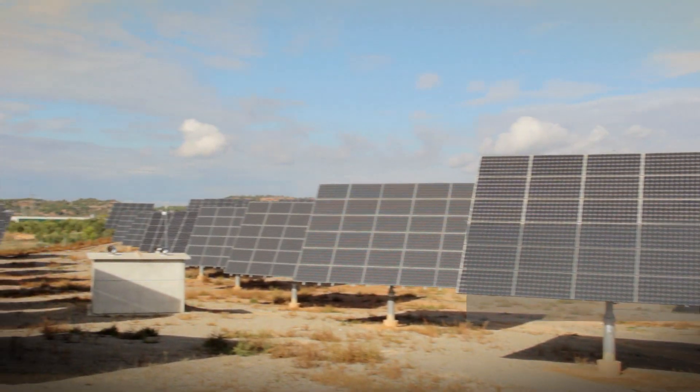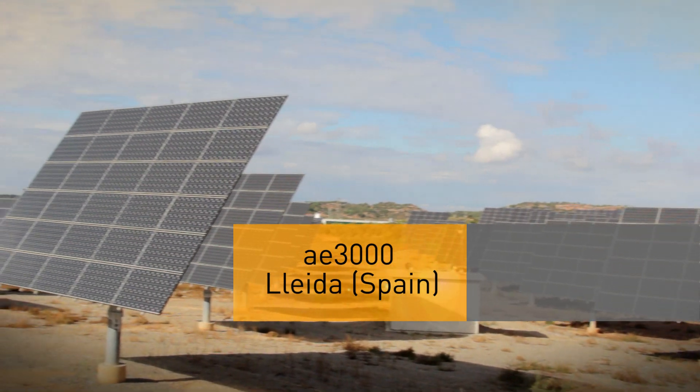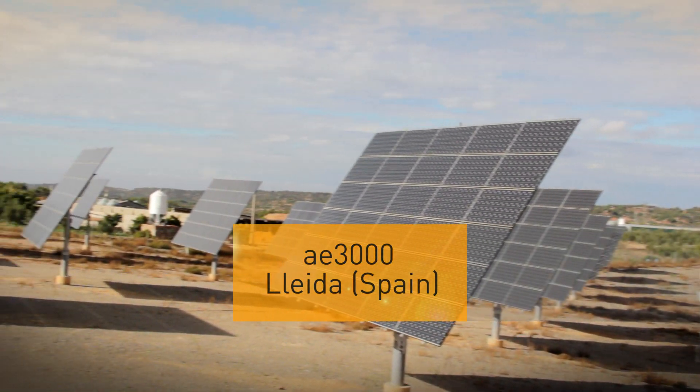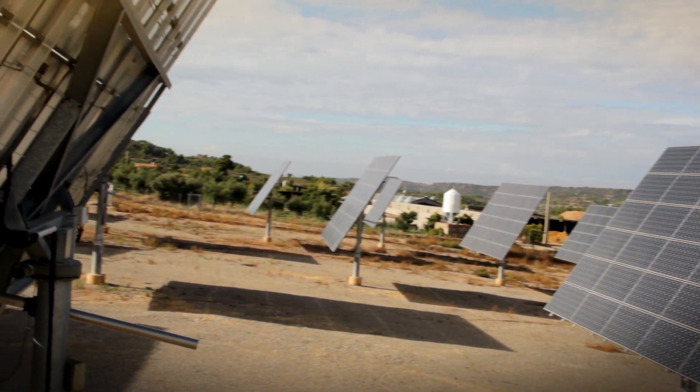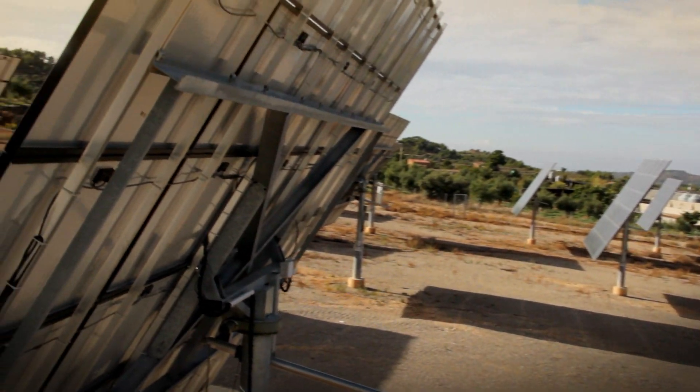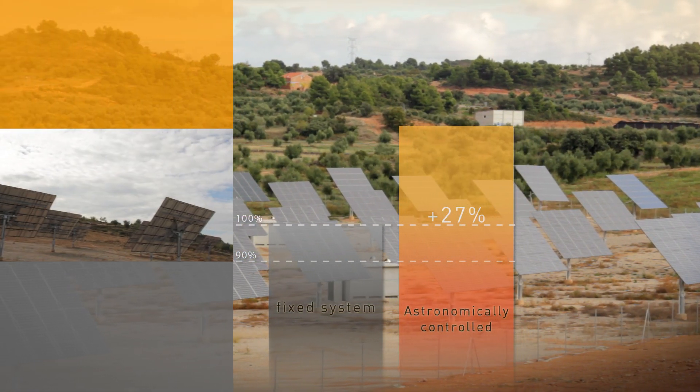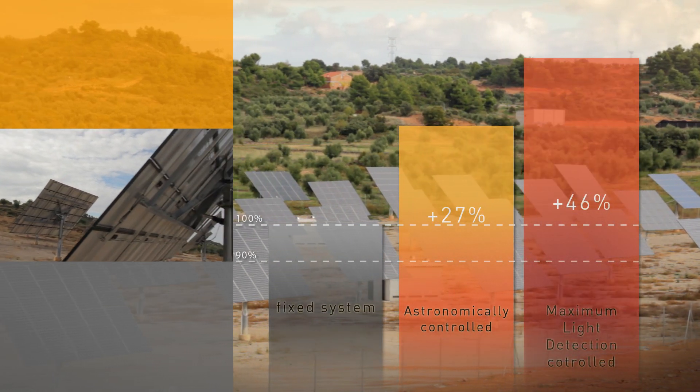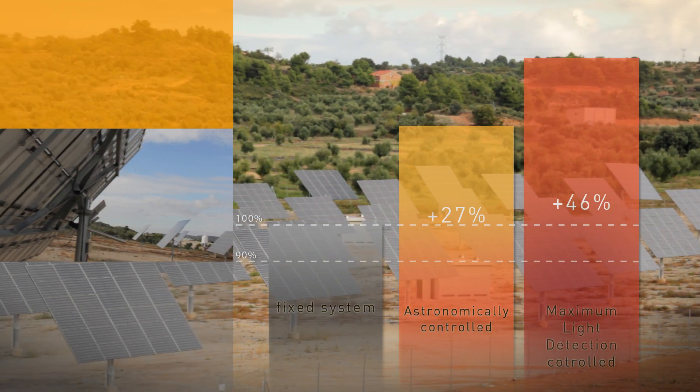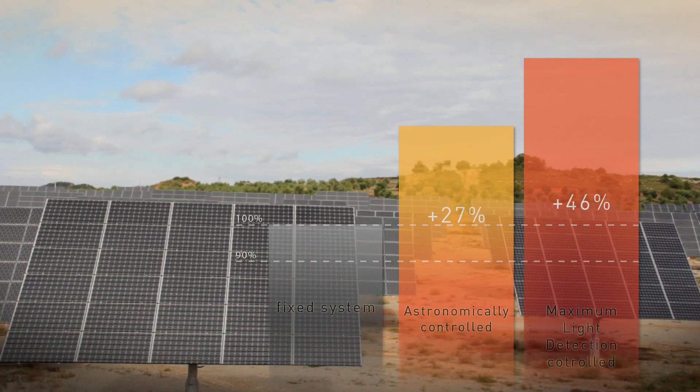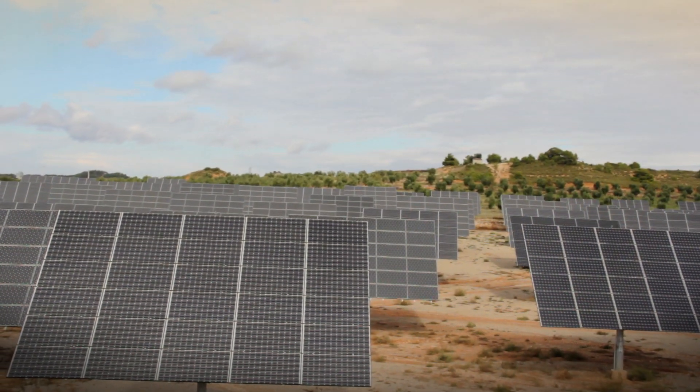The Fraunhofer Institute for Solar Energy Systems calculated a 27% higher output of astronomically controlled systems compared to fixed systems. Spanish solar farm operator Picanda Solar discovered that they had achieved a 46% higher yield using Digger Trackers than with a comparable fixed system.